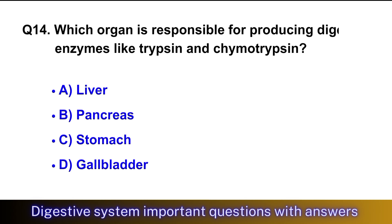Question No. 14: Which organ is responsible for producing digestive enzymes like trypsin and chymotrypsin? The right option is option B, pancreas.